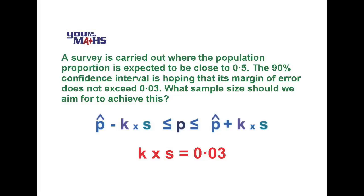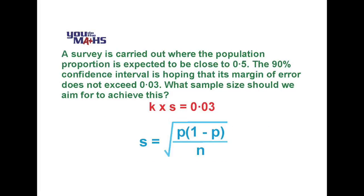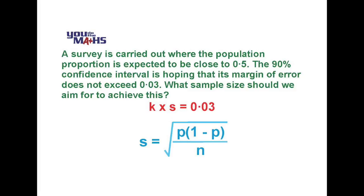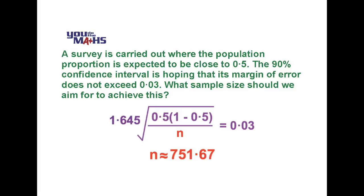So we go to our standard deviation formula and substitute 0.5 for p, the population proportion. k represents the number of standard deviations away from the mean and so in this case it's 1.645 for a 90% confidence interval. So now it's a matter of solving for n and we can do that on a calculator. If we go through and solve it we get n is approximately 751.67.